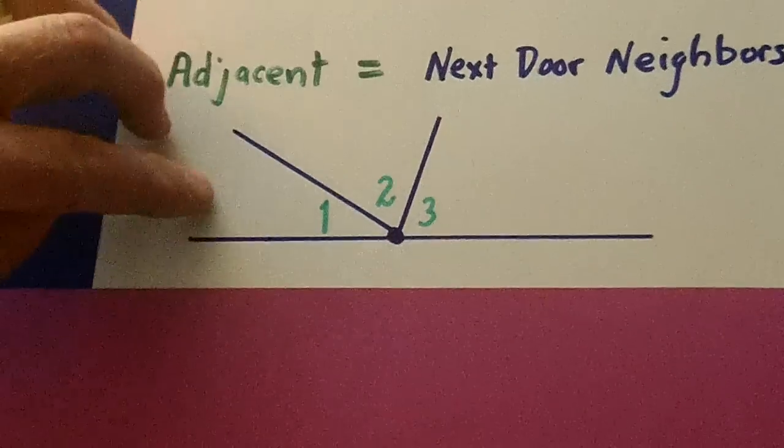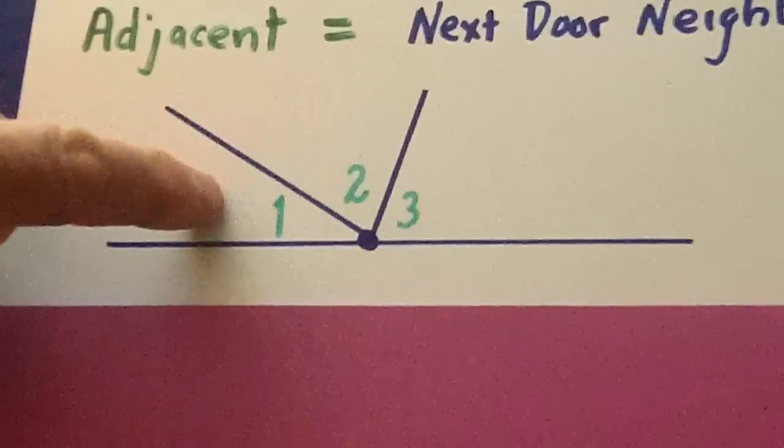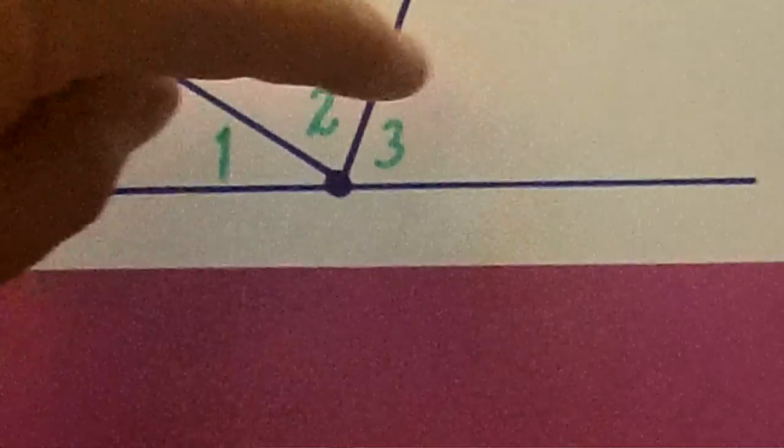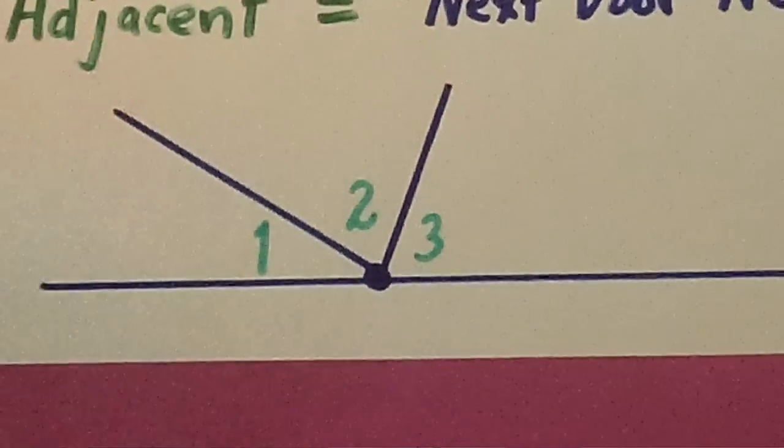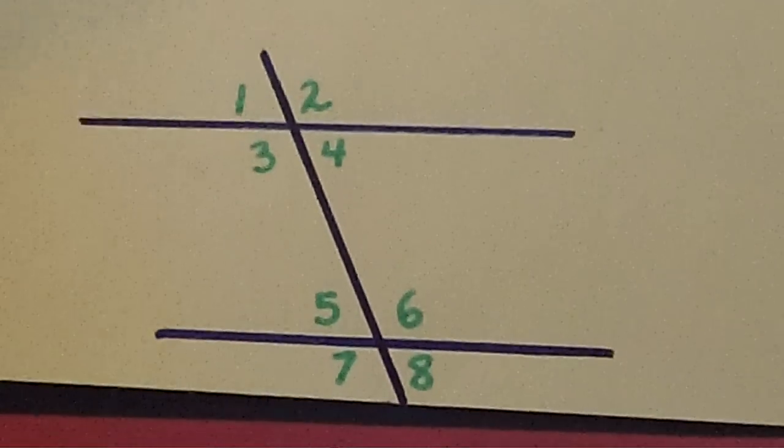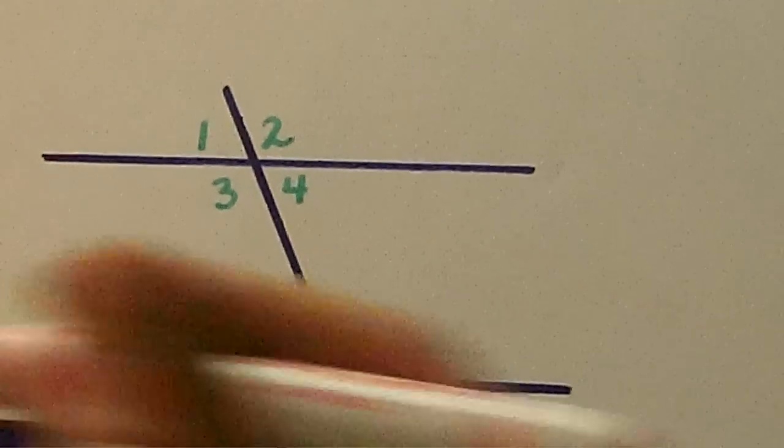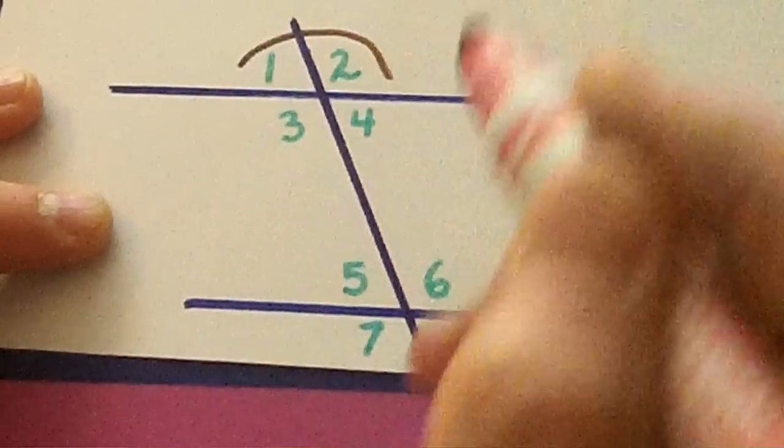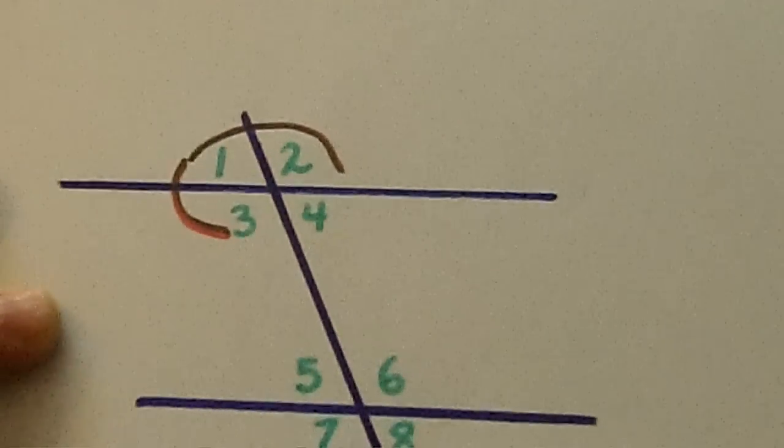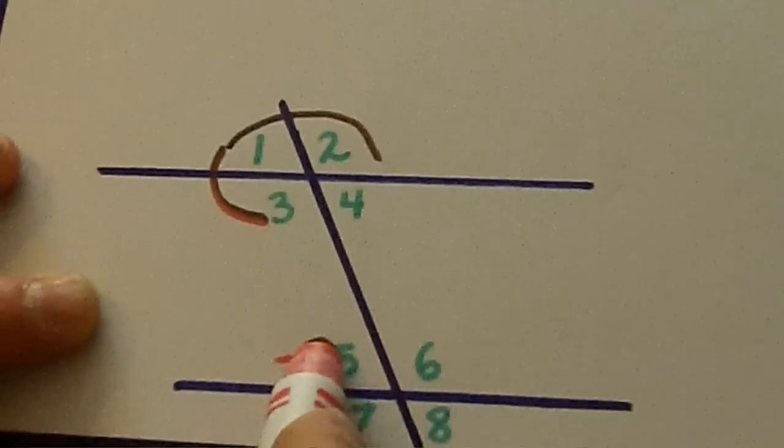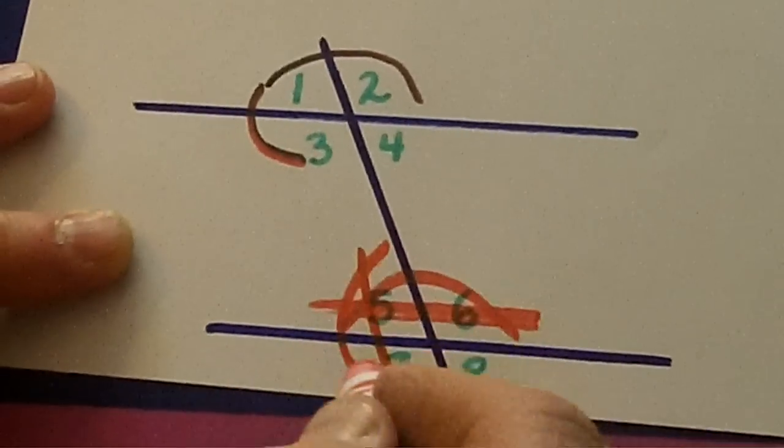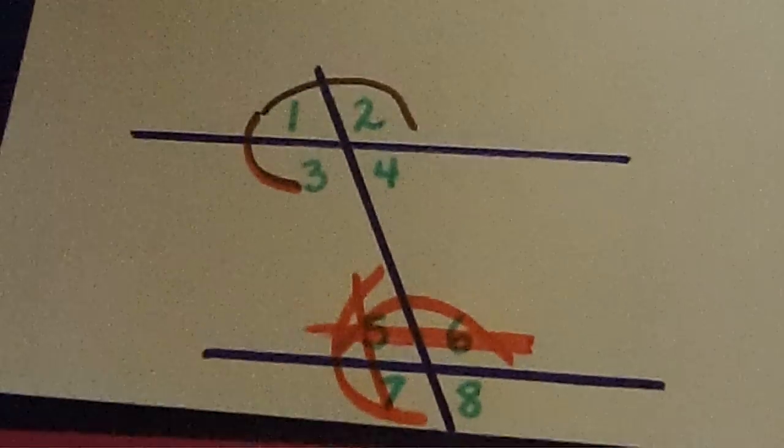Now let's look right here. Angles 1 and 2 are adjacent. Angles 2 and 3 are adjacent. But angles 3 and 1 are not adjacent because they're not right next door to each other. Let's look down at this wild transversal. Angles 1 and 2 are adjacent, and angles 1 and 3 are adjacent. Angles 5 and 6 are adjacent, and angles 5 and 7 are adjacent.